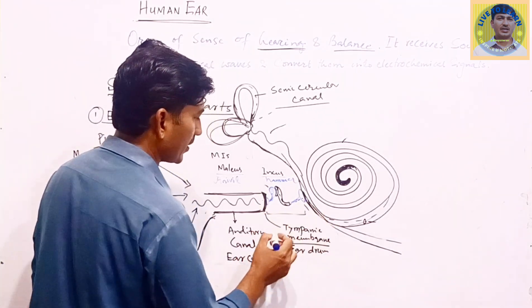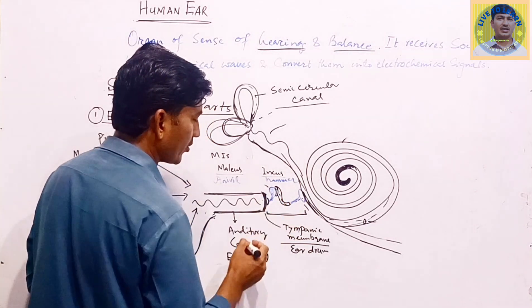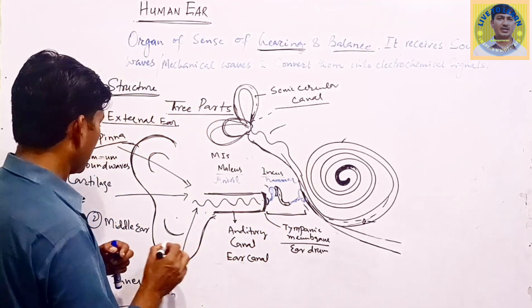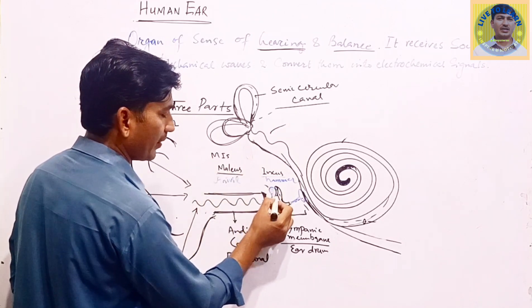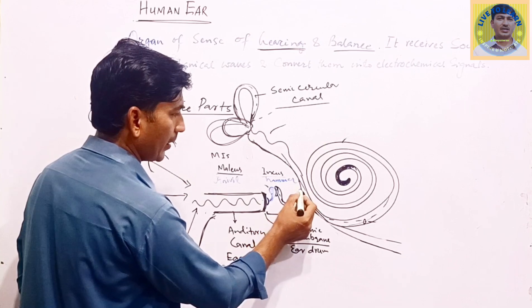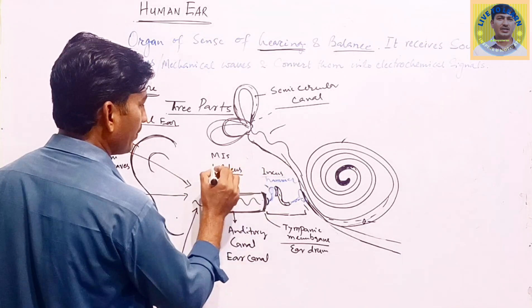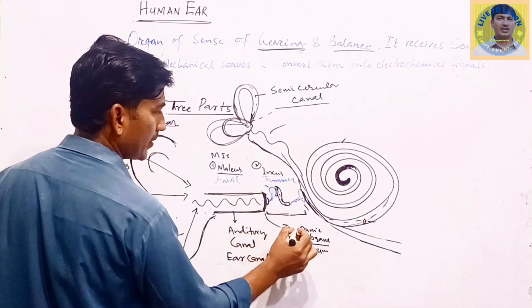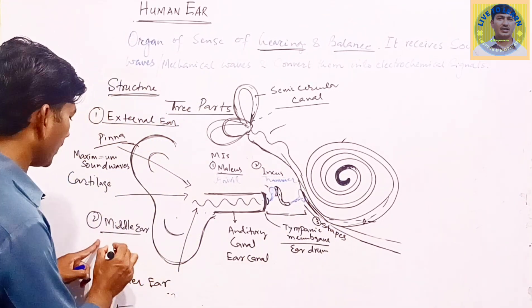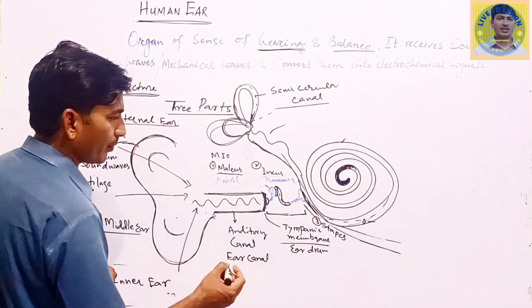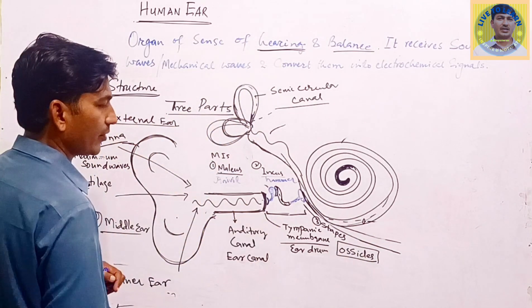Then the middle ear starts. The middle ear consists of a special set of three bones. The structures involved in the middle ear include: the first bone is called the malleus, the second hammer-like structure is called the incus, and the third bone is called the stapes. These three bones — malleus, incus, and stapes — are generally called ossicles. When the sound waves strike the eardrum they cause it to vibrate, and then the vibration is shifted into these three bones.